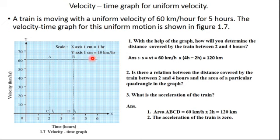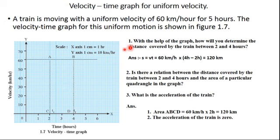This is called uniform motion because every hour the train is moving at the same velocity of 60 kilometers per hour — 60 km in the first hour, 60 km in the second hour, 60 km in the third hour, and so on. Now the first question is: with the help of this graph, how will you determine the distance covered by the train between 2 to 4 hours?